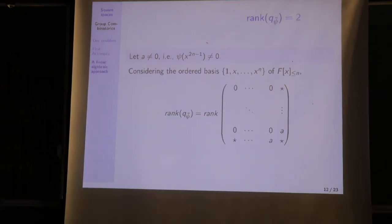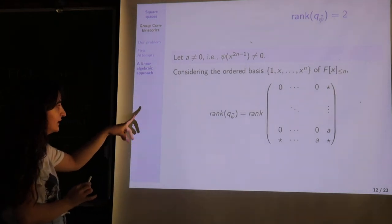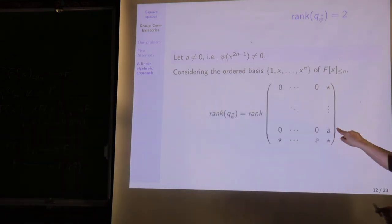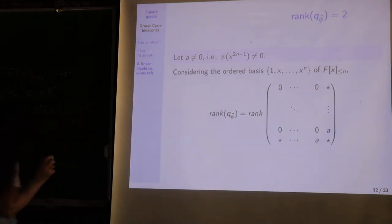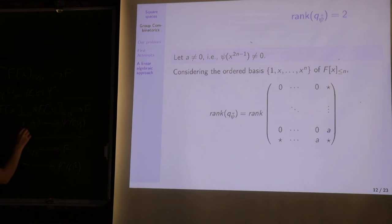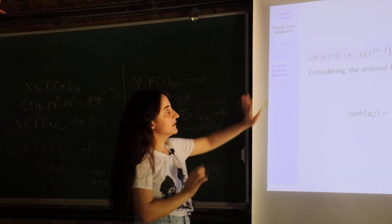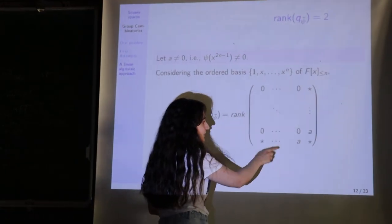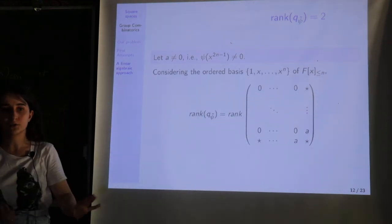If instead we let a be non-zero, we get a different associated matrix for Q_{ψ̃}. In this case, ψ(x^(2n−1)) ≠ 0, arising from evaluating x^(n−1) times x^n. Since this matrix has two pivot positions due to the symmetric non-zero entry, the rank equals 2.